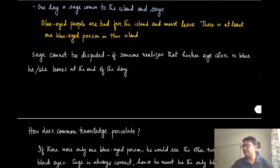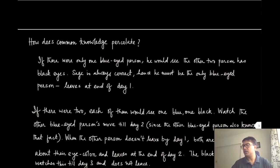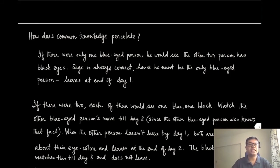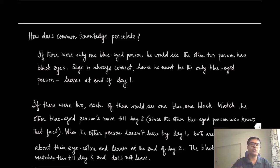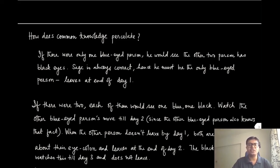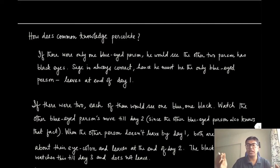Let's answer this in steps. If there was only one blue-eyed person, the moment the sage makes the statement, that person looks at the other two and finds their eyes are black. Since the sage cannot be disputed, that person must be the only blue-eyed one and leaves at the end of day 1. The others then know that this person was the only blue-eyed one and do not leave.